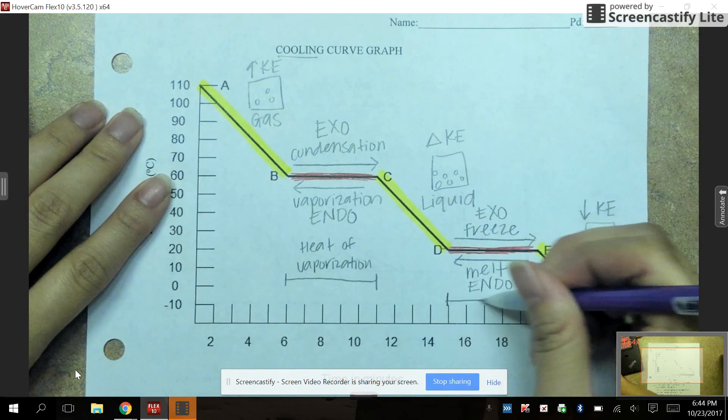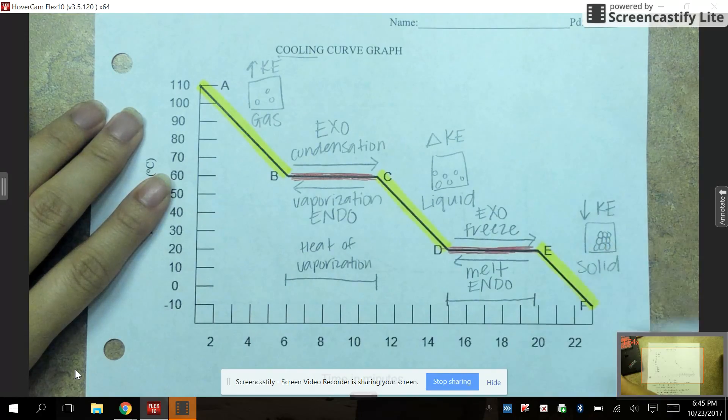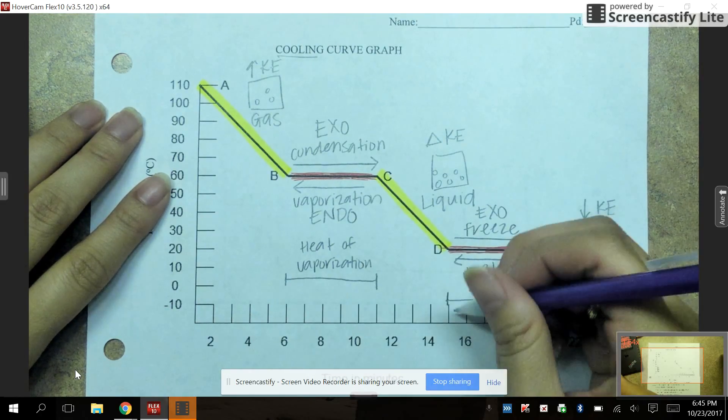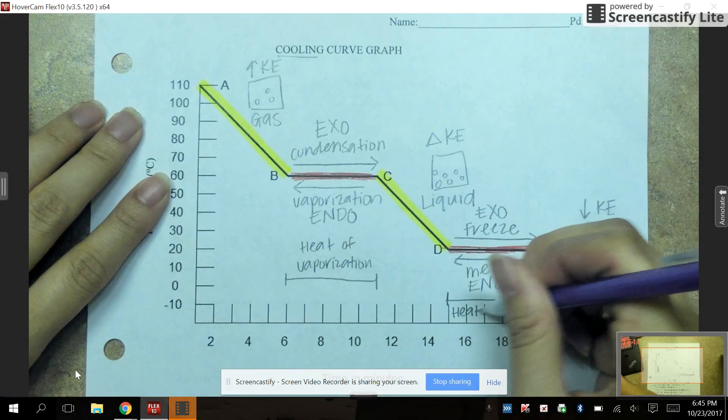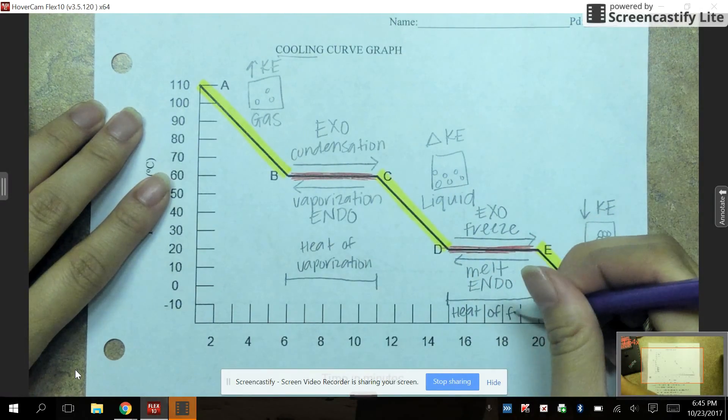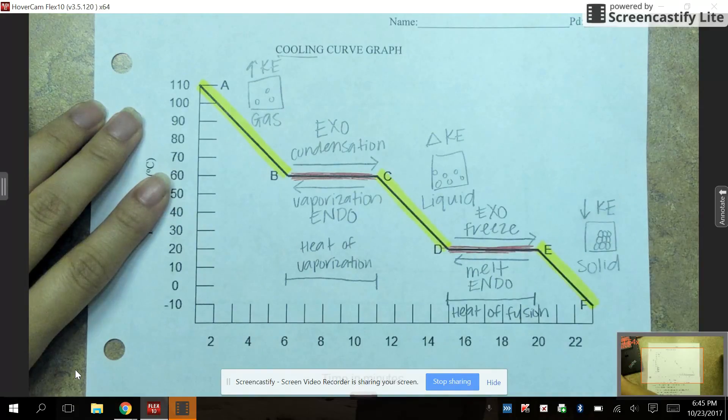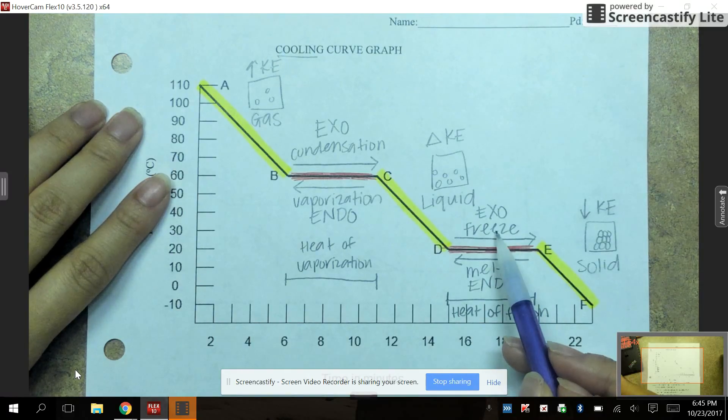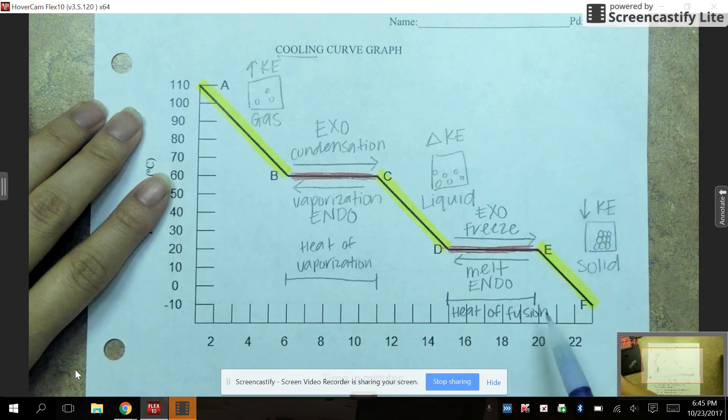This section, so this red section, also has a special name that you need to know. This section is called the heat of fusion. So hopefully you can see that there, heat of fusion. And so again, we won't really go into more detail, except that you need to know that this section can either be considered freezing, melting, or heat of fusion. So just another vocab term to keep in mind.